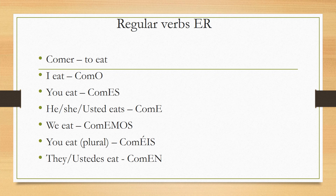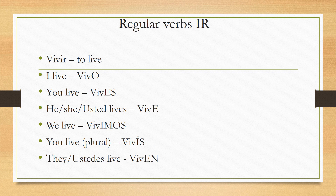The last group is the IR verbs, which are a little bit more difficult. Take the example of 'vivir.' For 'I,' the ending is O — so 'I live' is 'vivo.' For 'you,' the ending is ES — be careful, it's ES and not IS — so 'you live' is 'vives.' For 'he,' 'she,' or 'usted,' the ending is E — so 'he/she lives' is 'vive.'